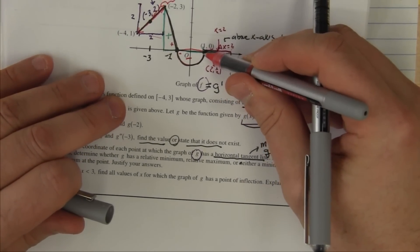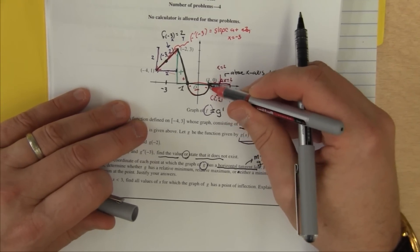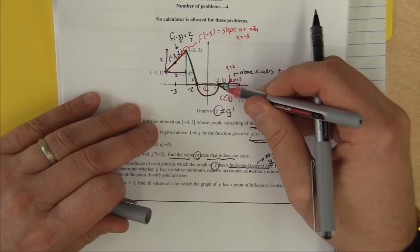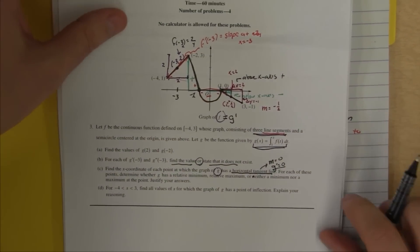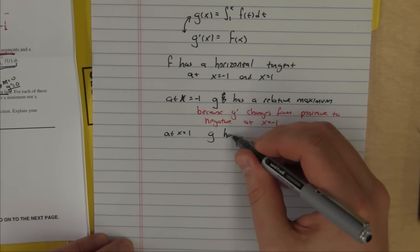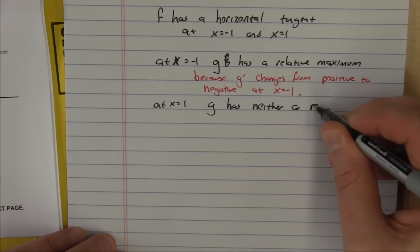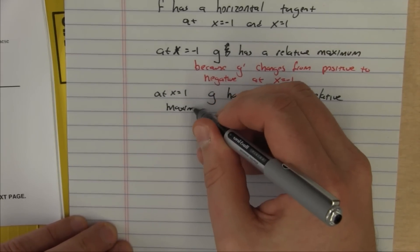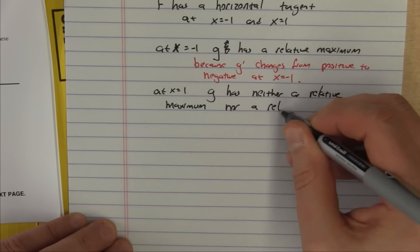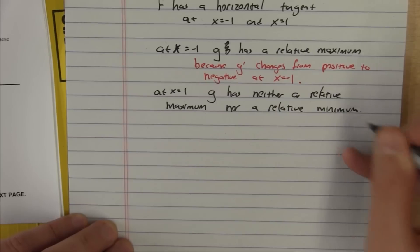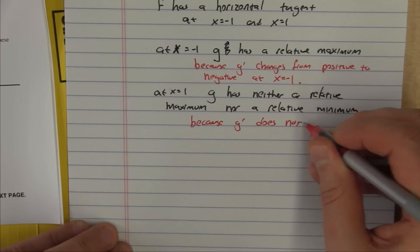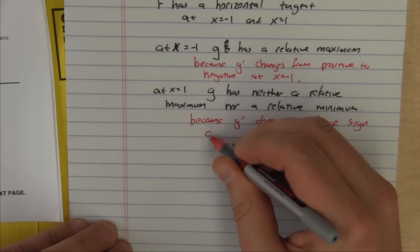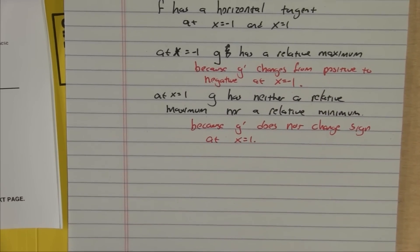At x equals 1, g prime comes along and it's negative, and then it stays negative. So g prime does not change sign here. Since g prime does not change sign, g does not have a min or a max at x equals 1. So g has neither a relative maximum nor a relative minimum. Our justification: g prime does not change sign at x equals 1. And now we are done with part c.